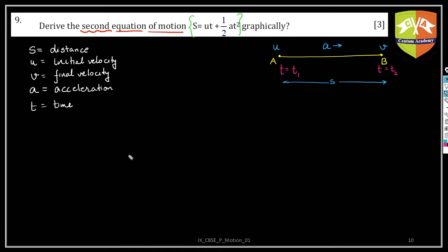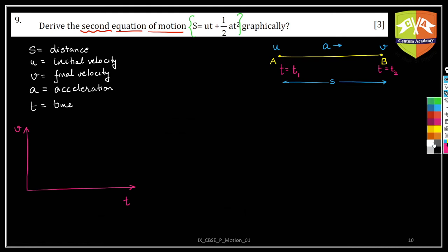We need to solve this graphically. We've learned two graphs: position-time graph and velocity-time graph. In this case we'll use the velocity-time graph, because we know that the area under the velocity-time graph gives displacement or distance traveled in straight-line motion. Let's set up the v-t graph with v on the y-axis and t on the x-axis, starting from t = t1, which we'll set equal to zero.